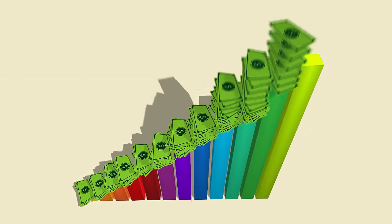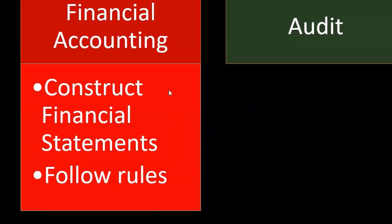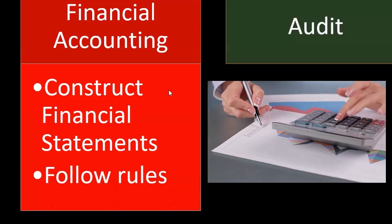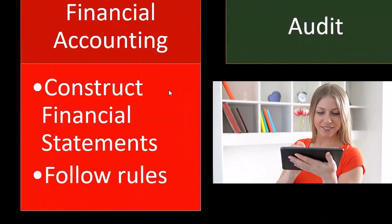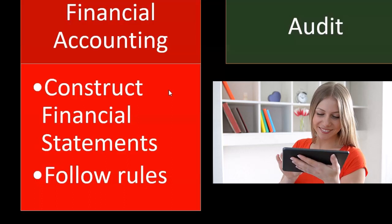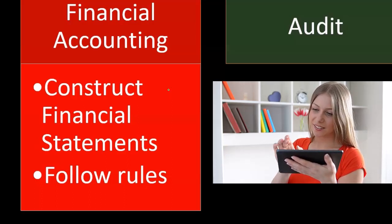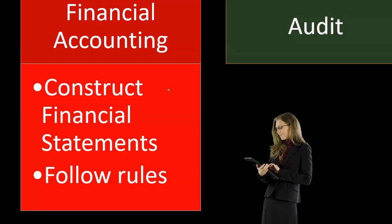In many cases, the financial statement creation is more difficult because we're actually building something from nothing — taking transactions and constructing the financial statements. However, the process is well-defined. We can think about putting a Lego set together: the instructions are pretty straightforward. When we have a question about how to record a transaction, we consult generally accepted accounting principles, get the answer, and record the transaction in accordance with specific rules. It's a long, tedious process, but each step has a set of rules to follow closely.